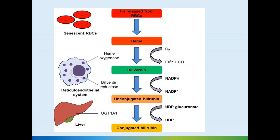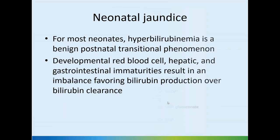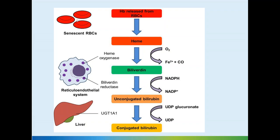This is a benign type of jaundice we'll discuss later. For most neonates, hyperbilirubinemia is a benign postnatal transitional phenomenon. However, developmental red blood cell, hepatic, and gastrointestinal immaturity results in an imbalance favoring bilirubin production over clearance. The fetus has a high load of red blood cells due to the hypoxic in-utero environment. When born and exposed to oxygen, more red cells are destroyed, the liver's conjugation process is slower, and more unconjugated bilirubin circulates.